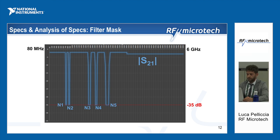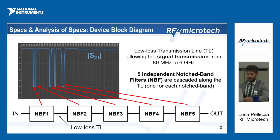You can see the 35 dB notches — called N1, N2, N3, N4, and N5. To realize this device, the simpler idea was to use a transmission line (TL) allowing signal transmission from 80 MHz to 6 GHz, and then to cascade five independent notch band filters (NBF), one for each notch band.